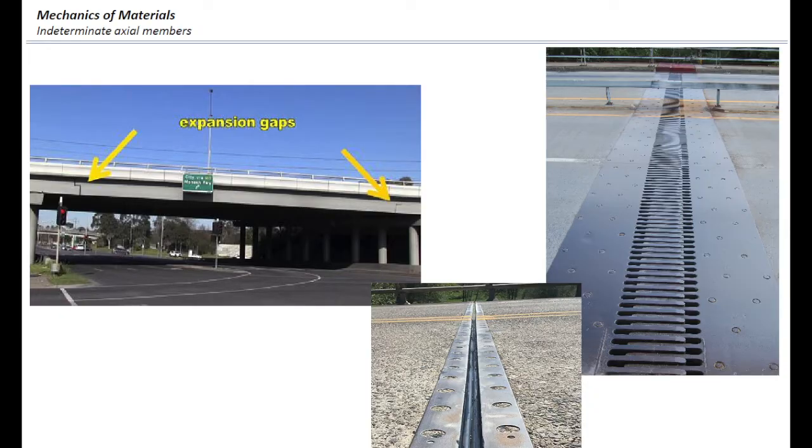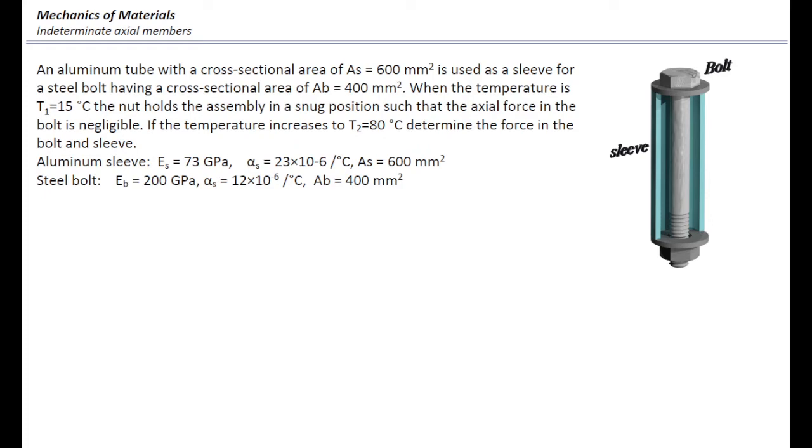Now, let's look into this problem. An aluminum tube with a cross-sectional area of A sub S equal to 600 square millimeter is used as sleeve for a steel bolt having a cross-sectional area of A sub B of 400 square millimeter.